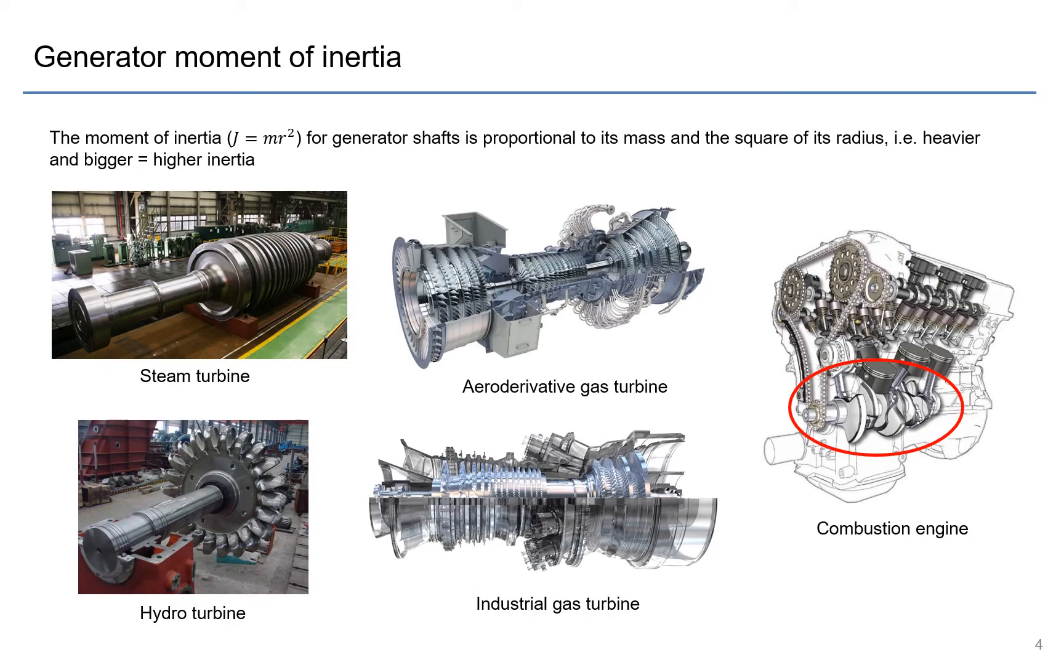So the moment of inertia for a generator is probably something that's familiar to you guys already and something that you would find on a generator data sheet. And from the equation J equals mr², for generator shafts the moment of inertia is proportional to its mass and the square of its radius. So the heavier and the bigger a generator shaft, then the higher the inertia. And you can see here typically with steam turbines and industrial gas turbines you may have some of the higher type inertia constants, whereas the aeroderivative gas turbines, which are as the name suggests derived from aeroplanes, they're much lighter and have lower inertia. And hydro turbines depending on its type can have quite high inertia as well.